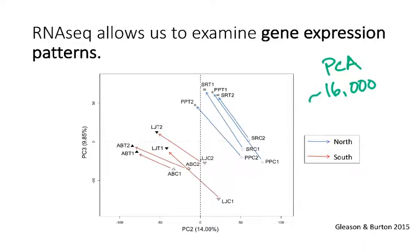I did an RNA-seq study and got gene expression data back. It can be informative to look on a gene-by-gene basis, especially for genes whose functions you're interested in. But a PCA is a really nice way to get an overall picture, taking into account all 16,000 genes and breaking that down into two-dimensional space — to see how individuals differ, or if individuals from different populations cluster together.